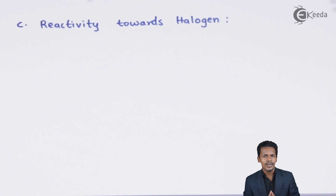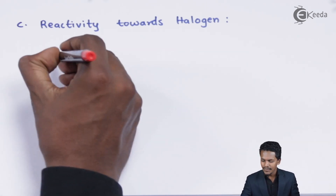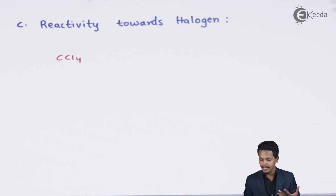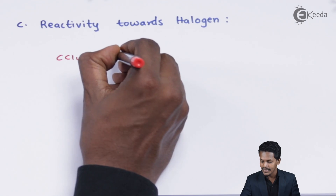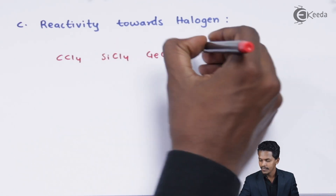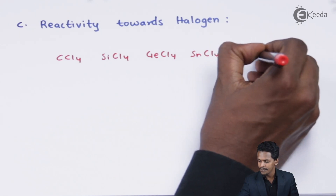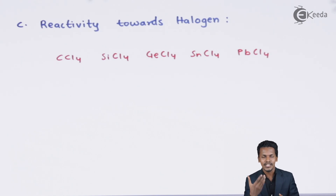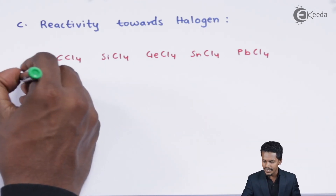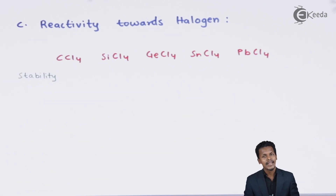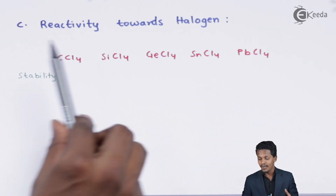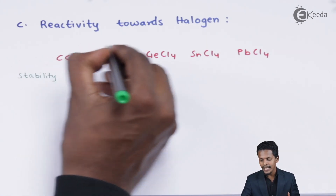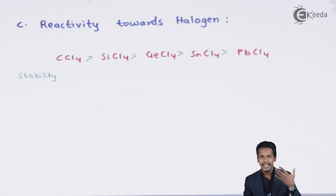Comparing the tetrahalides — CCl4, SiCl4, GeCl4, SnCl4, and PbCl4 — in terms of stability: since carbon exhibits a stable +4 oxidation state, CCl4 is the most stable. Stability decreases down the group, so SiCl4 is less stable than CCl4, and so on. The stability of the tetrahalides decreases going down Group 14.